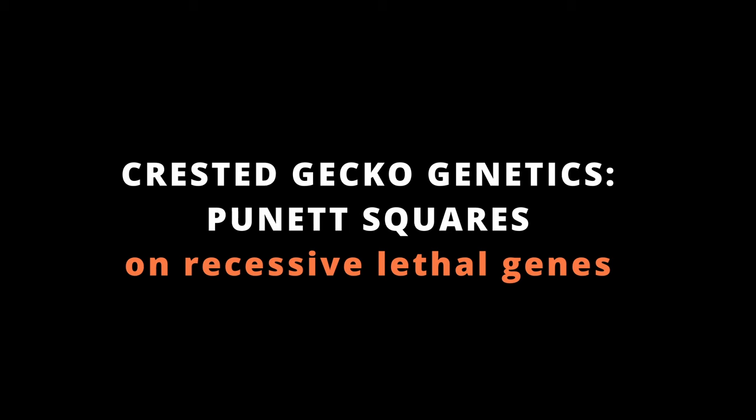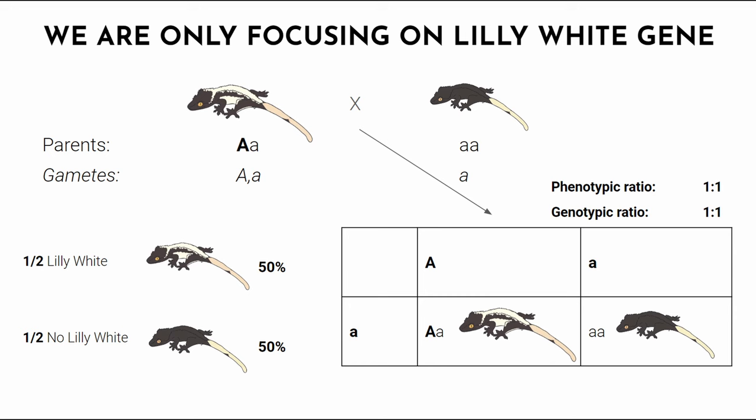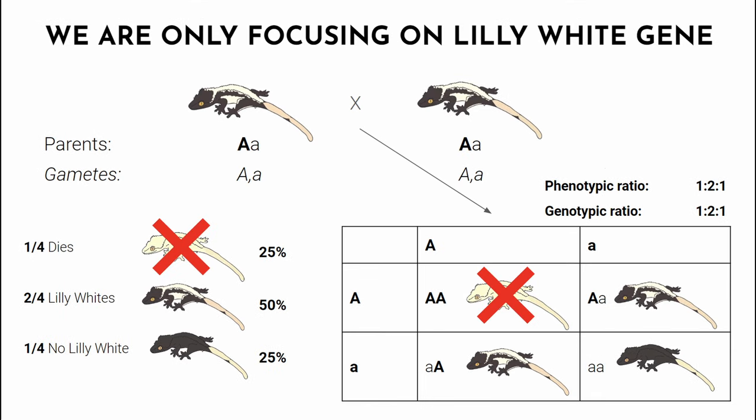Recessive lethal genes work exactly the same way as incomplete dominant genes — this is why they are often confused. However, incomplete dominant genes have a super form that is alive, while recessive lethal genes have a super form that is not alive: two copies of the gene kill the offspring. Pairing a lily white with a non-lily white gives half lily white and half not lily white. Lily white only ever exists with one copy because two copies kill the crested gecko. The best option is always breeding a lily white with a non-lily white. Breeding lily white to lily white kills one of four babies: one big A/big A (dead), two big A/small A (lily white), and one small A/small A (not lily white).